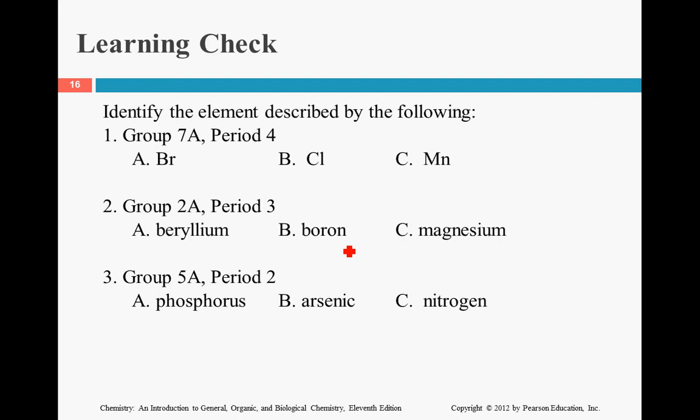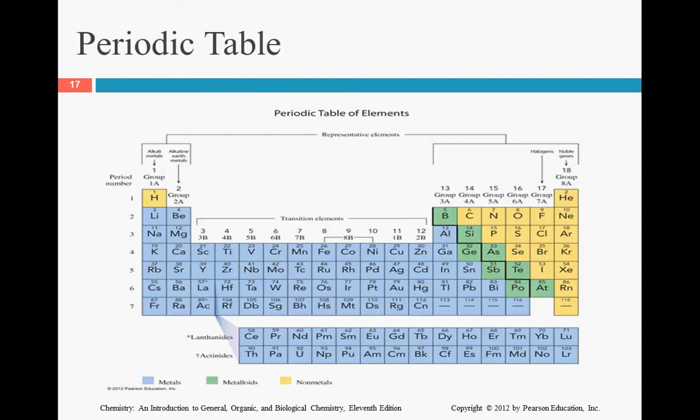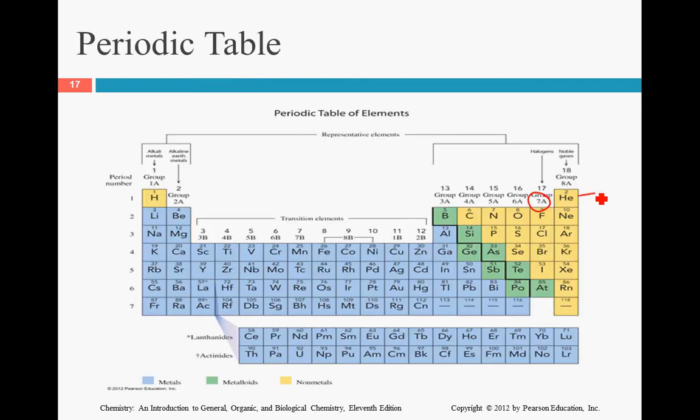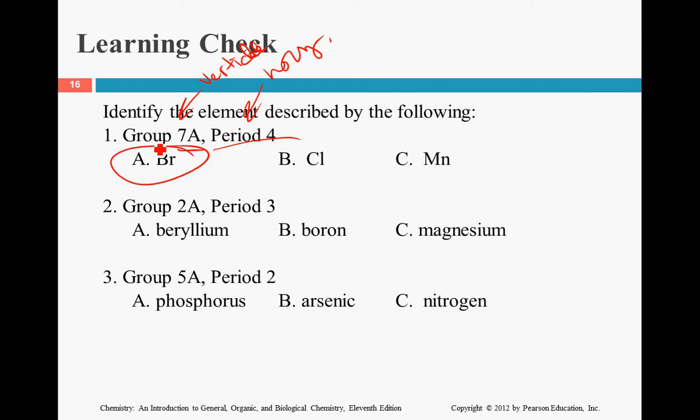Let's take a second to identify the element that is being described. We have group 7A. Now, remember, group means that it is the vertical rows. Whereas, periods are horizontal. So, 7A. A means it's the tall group. So, 1, 2, 3, 4, 5, 6, 7. And then it's in the fourth period, which means it's in the fourth row down. Remember, you start counting at hydrogen and helium. So, 1, 2, 3, 4. That would be bromine. Brilliant.